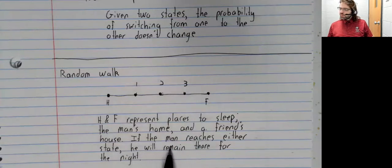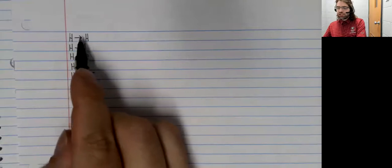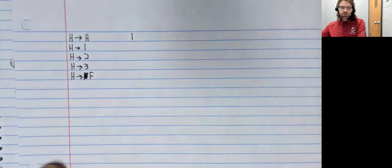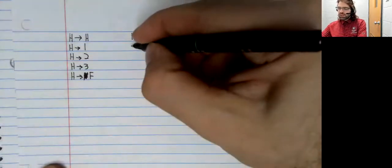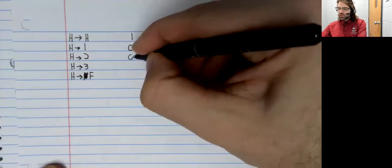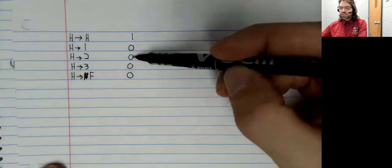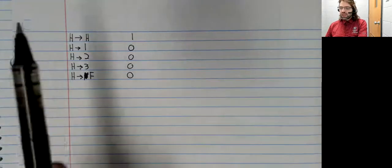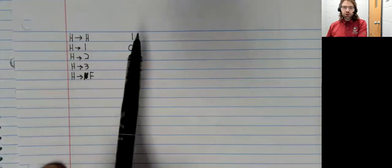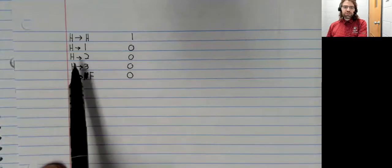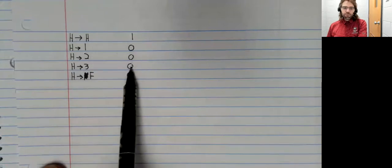Well, I say that if the man reaches this state, he'll remain in this state. In other words, the probability of going from H to H is 100%. Now, the probability of going from H to 1, 2, 3, or F, those probabilities are zero. And what I meant when I said that the transition probabilities are fixed is that these probabilities never change. The probability of going from H to H is always 1, the probability of going from H to 3 is always 0.